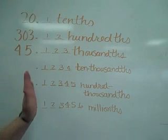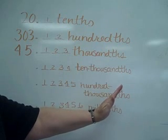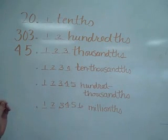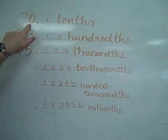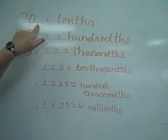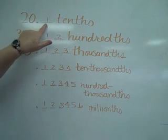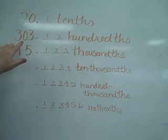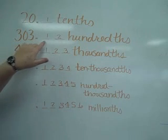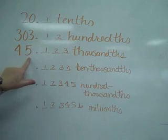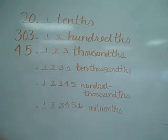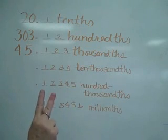So now, what do you do if you have numbers in front of the decimal? I read them in four different ways: I read the number in front, I read the decimal as 'and,' I read the number behind, and I read the place value. So this would be 20 and one tenth. This would be 303 and twelve hundredths. This would be 45 and 123 thousandths. Four things: number in front, the decimal as 'and,' the number behind, and then your place value.